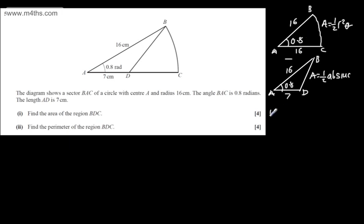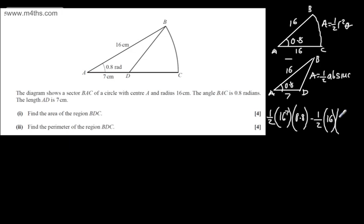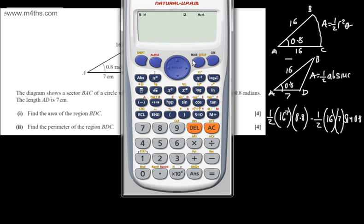So we're going to have ½R² — well, the radius is 16, so it's ½ of 16 squared, multiplied by the angle in radians which is 0.8, minus ½ × A × B × sin(0.8). We need to make sure the calculator is in radians mode — Shift, Mode, 4. So we've got 0.5 × 16² × 0.8, and that gives me 102.4.